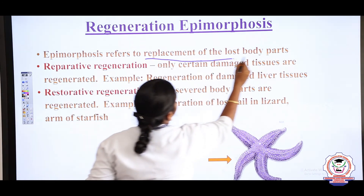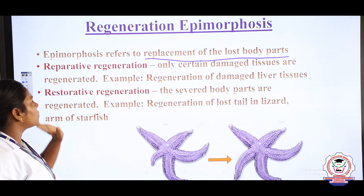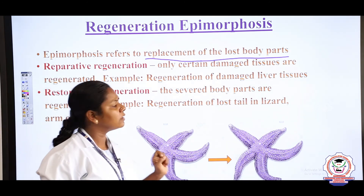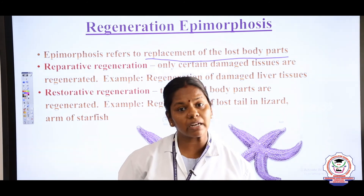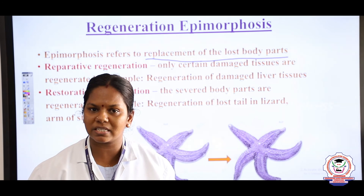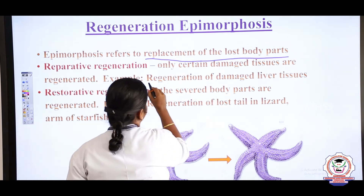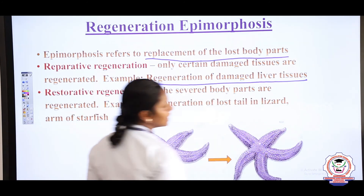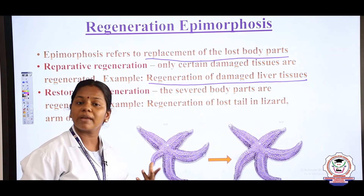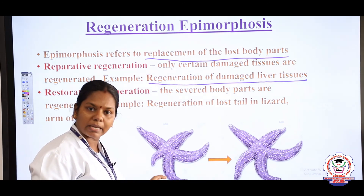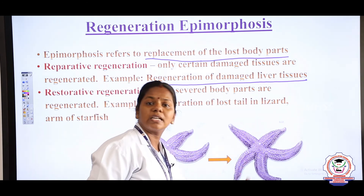Epimorphosis is of two types: reparative and restorative. Reparative means if any tissues get damaged, the organ repairs itself — for example, the liver. If liver tissues are damaged, the liver has the capacity to regenerate its damaged tissues; this is reparative regeneration. Restorative — for example, starfish: if one arm of a starfish is lost due to an accident, it has the capacity to regenerate a new arm; this is restorative regeneration.